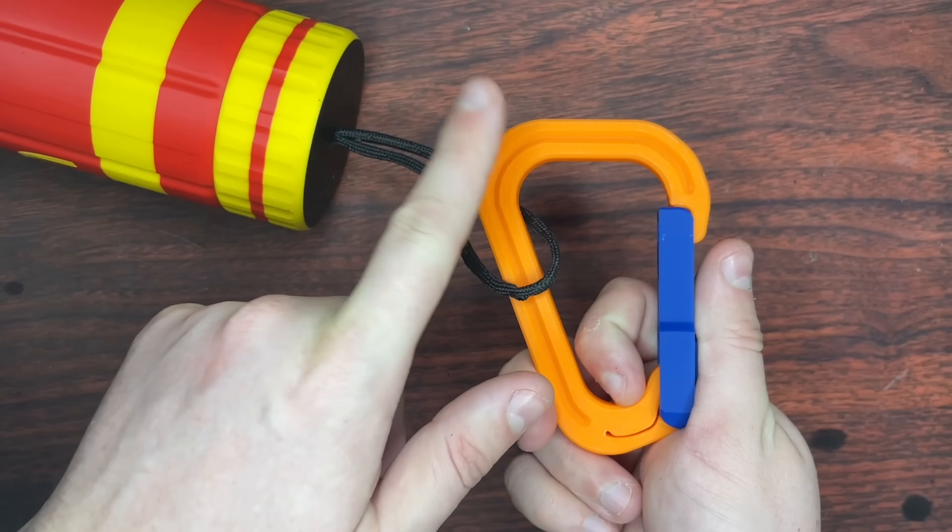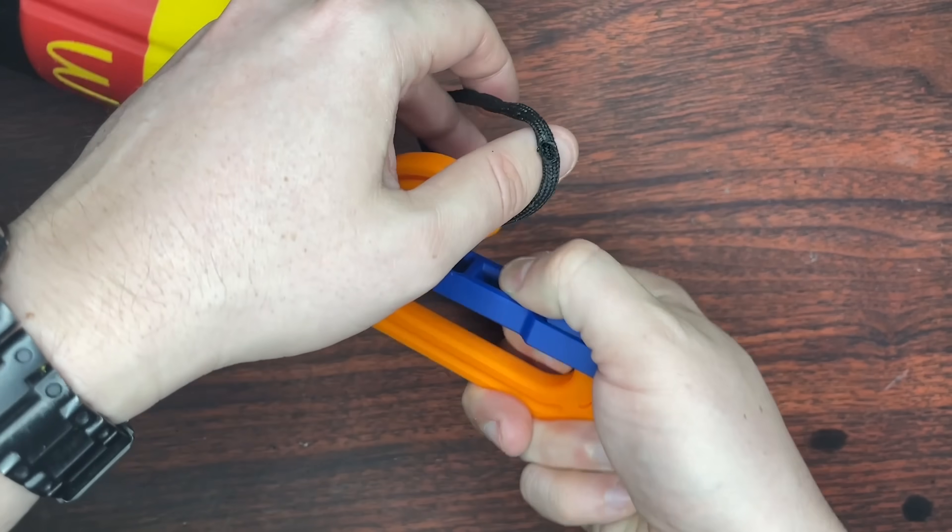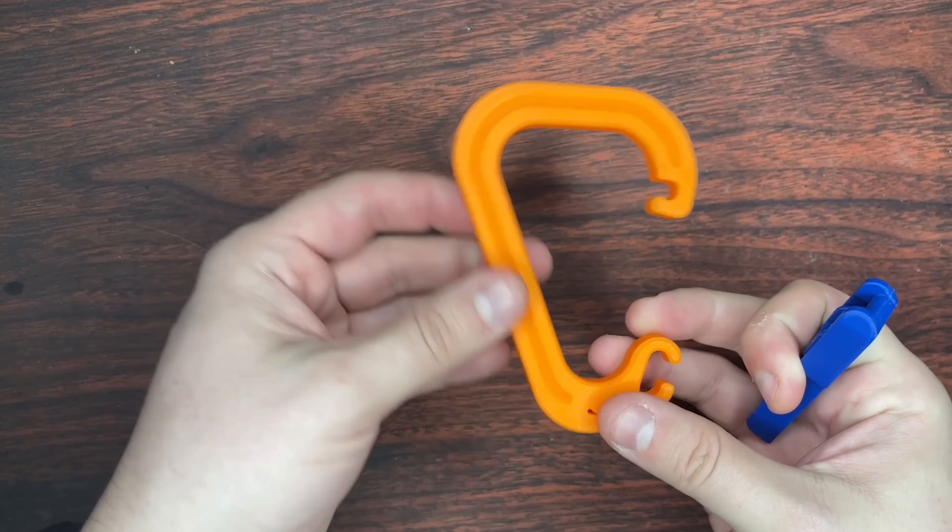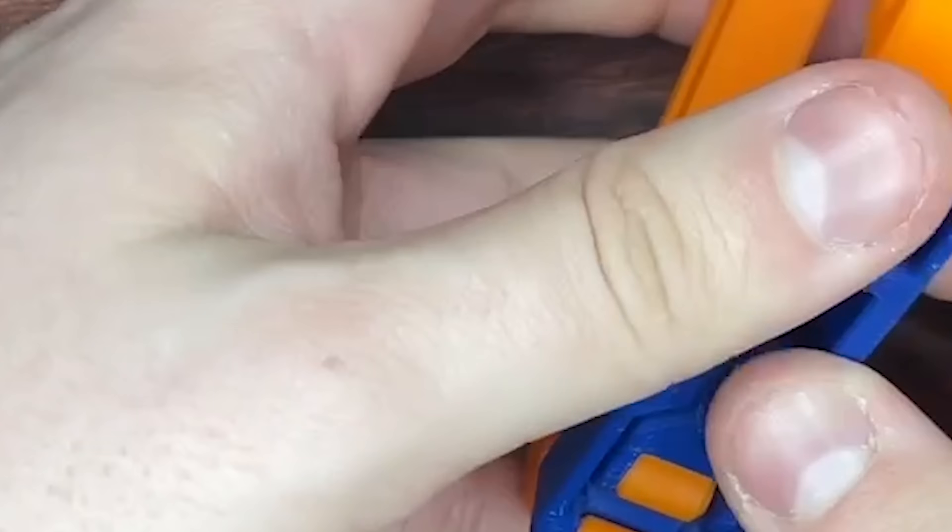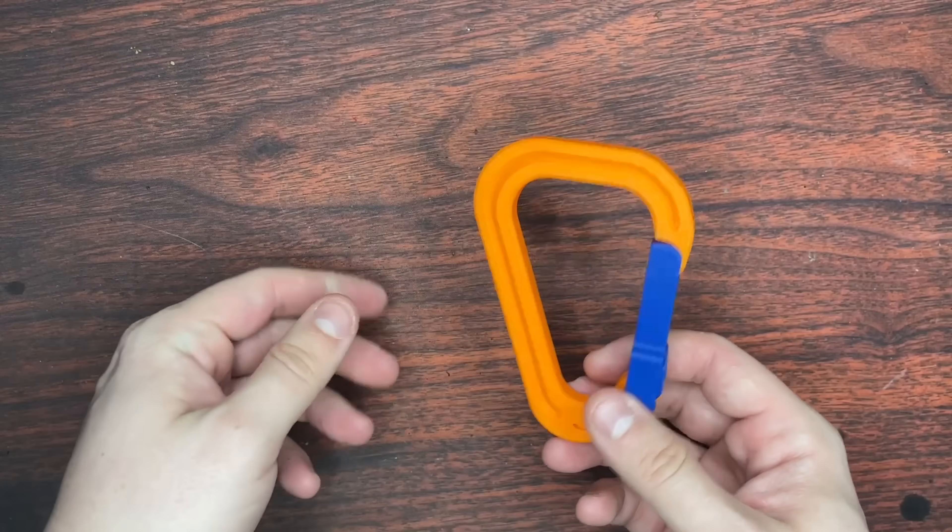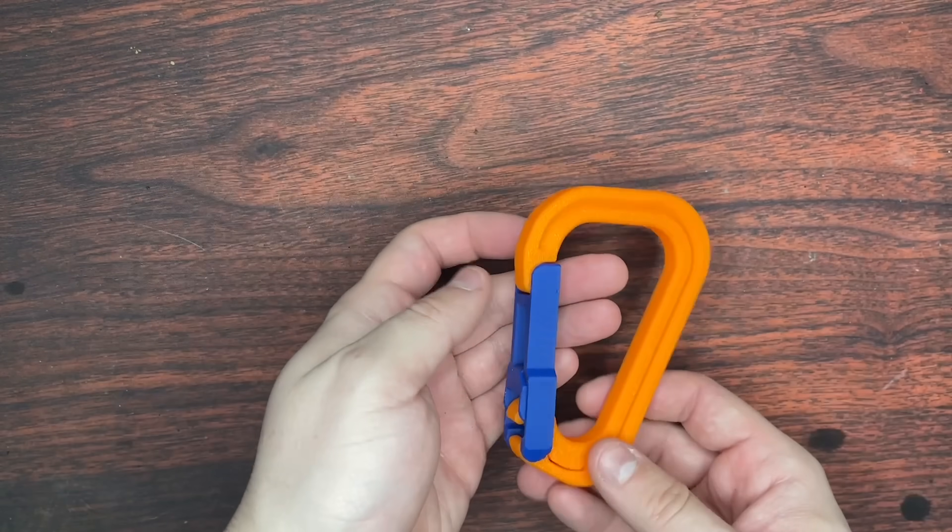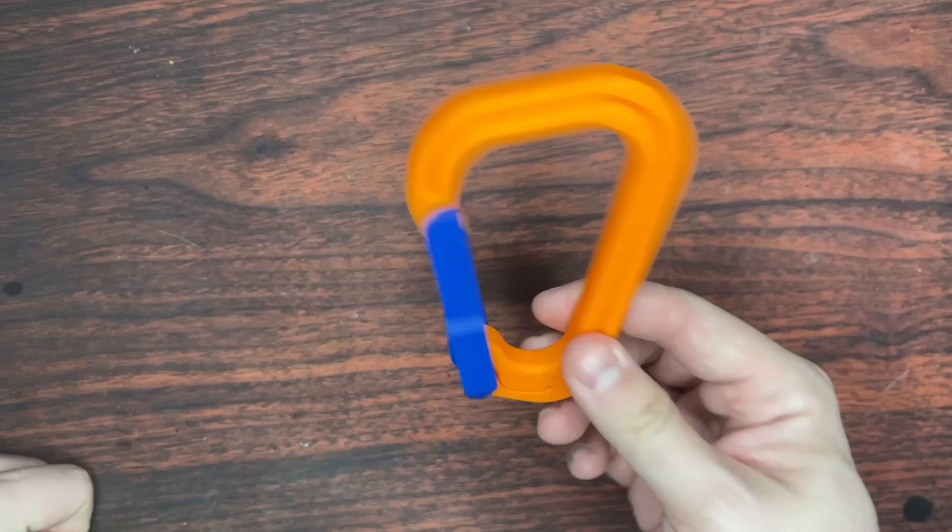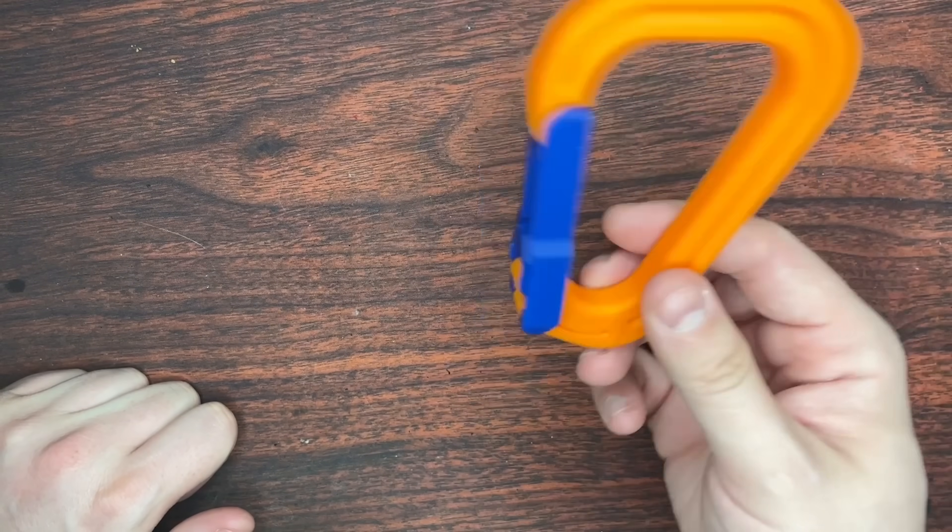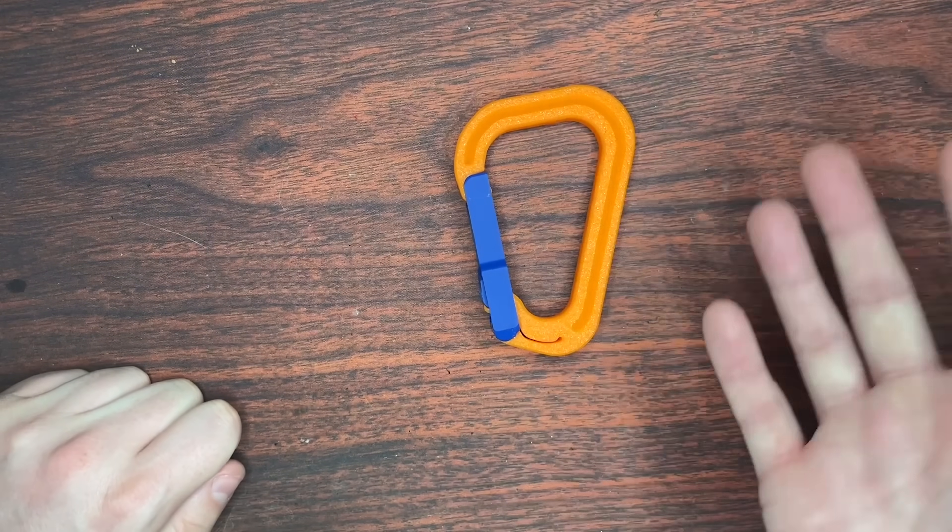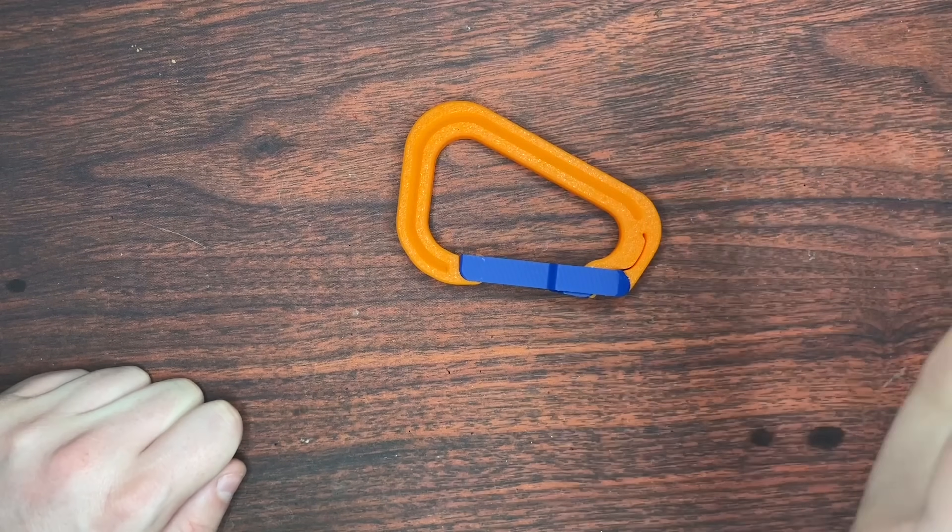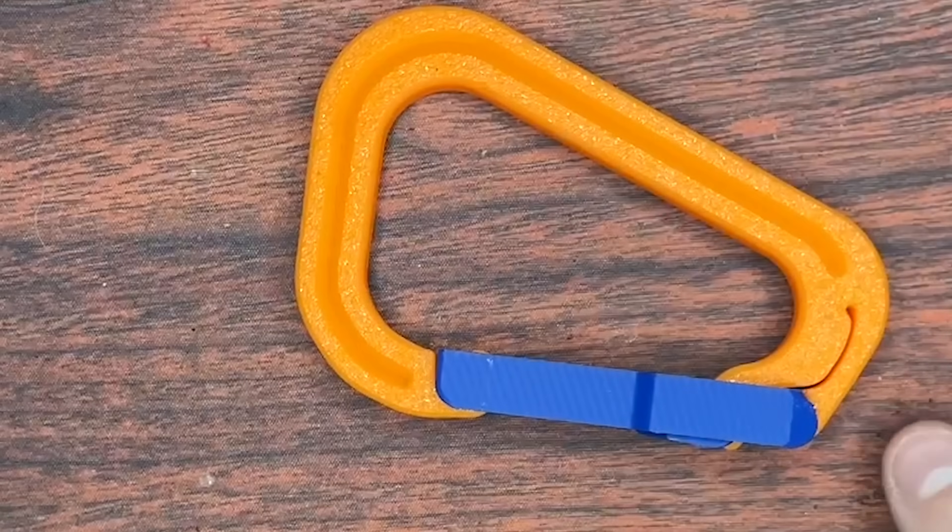This model is an even further improved version of whatever that one was. They print out in two separate parts. It's a lot of fun to mix and match the colors, and then you just kind of snap them together, and then off to the races. You got yourself a carabiner. They're made out of plastic, so obviously don't go rock climbing in these, but let's be real. You weren't rock climbing in your other ones either. You just needed to hang your water bottle off of your backpack. These get the job done in fantastic fashion, and you can make them all sorts of different colors. 10 out of 10. I have way too many of these, and I will make many more.